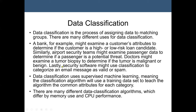Doctors might also examine a tumor biopsy to determine if the tumor is malignant or benign. Based on a model trained on a dataset where we know which tumors are malignant or benign, we can then use new patient data to have the model determine the diagnosis. Another example: security software might use classification to categorize email messages as valid or spam, based on the subject or content of the email.